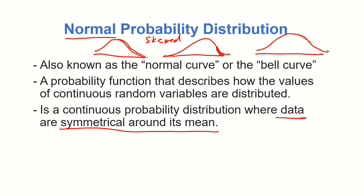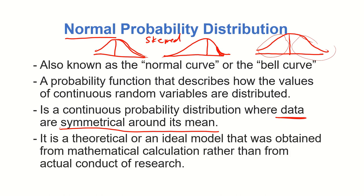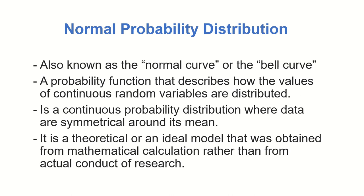Whatever is the number of data found in the left side of the curve is the same as the number of data found to the right side of the curve. Normal probability distribution is a theoretical or ideal model obtained from mathematical calculation rather than from actual conduct of research. Each of the values along the curve are based on a mathematical calculation rather than from observed values. Normal probability distribution is based on probability theory, not from actual data gathering. However, normal distribution is useful in the analysis and comparison of data from actual research.